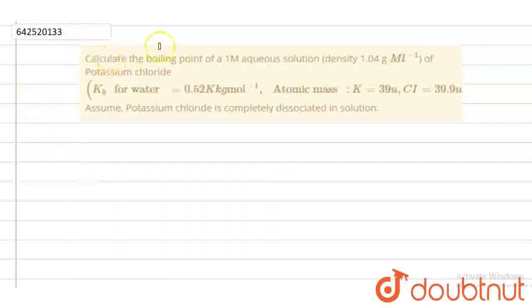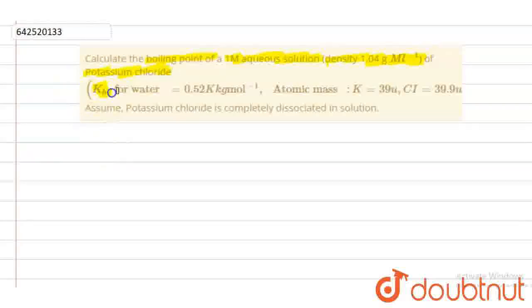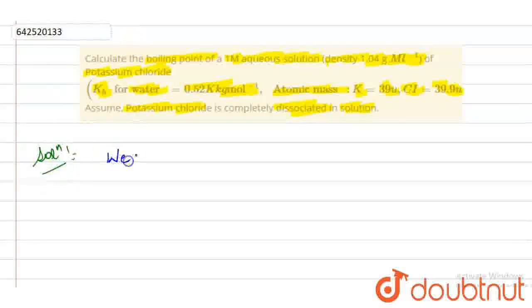Our question is: calculate the boiling point of a 1m aqueous solution of potassium chloride whose density is given as 1.04 g/mL. We have given the value of Kb for water and atomic masses of potassium and chlorine. Assume potassium chloride is completely dissociated in the solution.